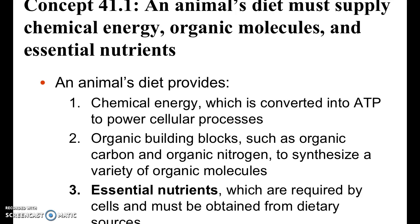For an animal to do its everyday functions, it needs a certain amount of energy. Energy comes in the form of ATP. ATP is produced by the mitochondria. We will cover this in more detail when we talk about cellular respiration, but for all intents and purposes here, ATP is produced by the mitochondria.